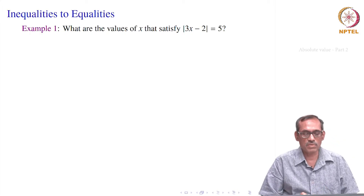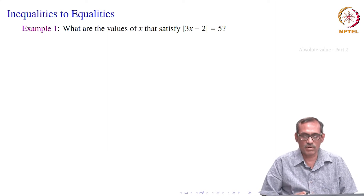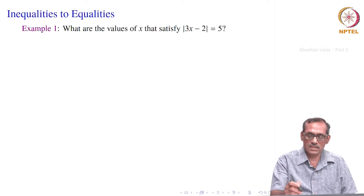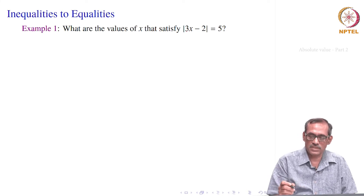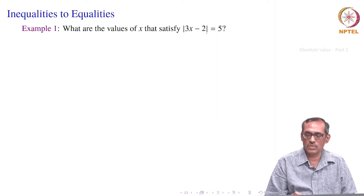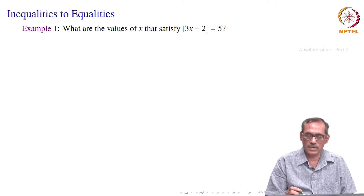Let us see how to use inequalities to prove equalities. But first, let us find out what this equality means. We need to find all real numbers x which satisfy the equation |3x - 2| = 5. You can think of squaring both sides, but there are better ways.